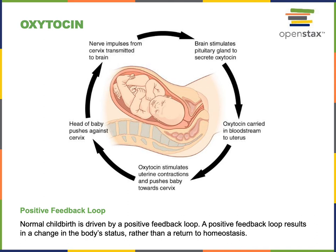The nerve impulse stimulates cells of the hypothalamus to secrete oxytocin. Oxytocin is secreted by neurons with cell bodies in the hypothalamus but axons in the posterior pituitary, releasing oxytocin into the bloodstream. Oxytocin then travels through the blood to the uterus, where it binds to receptors on the smooth muscle fibers in the myometrium, activating those cells to contract and push the baby further into the cervix.